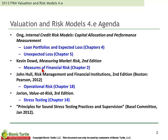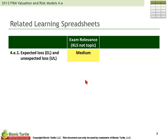This is highly significant to us, highly testable. And we have, as usual, one learning spreadsheet associated: 4E1, which is an example of the expected loss and unexpected loss calculations that we'll review shortly here in just a few slides.